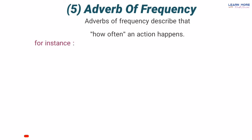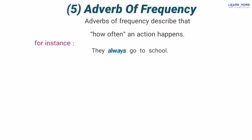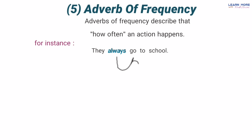For example: 'How often do they go to school?' — woh school kitni baar jaate hain, kab kab jaate hain? Answer hai: 'They always go to school' — woh school hamesha jaate hain. Ab jo 'always' hai yeh adverb of frequency hai kyunke yeh unke kaam jo woh karte hain — jaane ka — uski frequency ke baare mein bata raha hai ke woh kab kab jaate hain: always, hamesha.